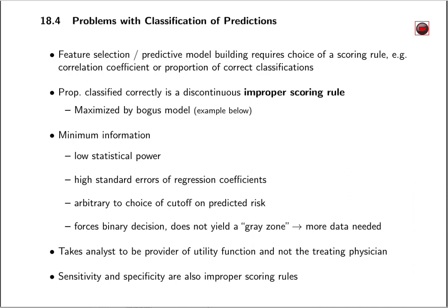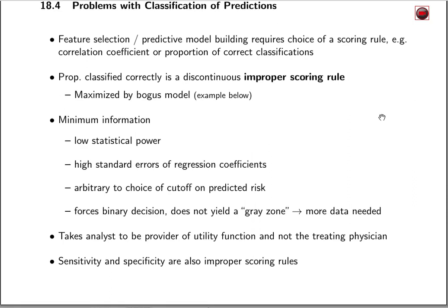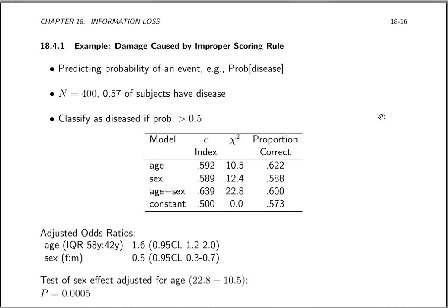In addition to proportion classified correct being an improper scoring rule, sensitivity and specificity are also improper scoring rules — they are optimized by a wrong model. Here is a simple example of what happens when you try to optimize an improper scoring rule.